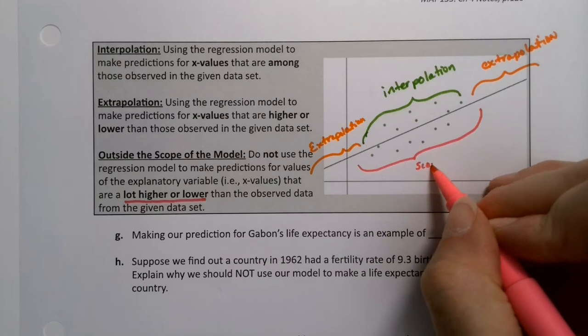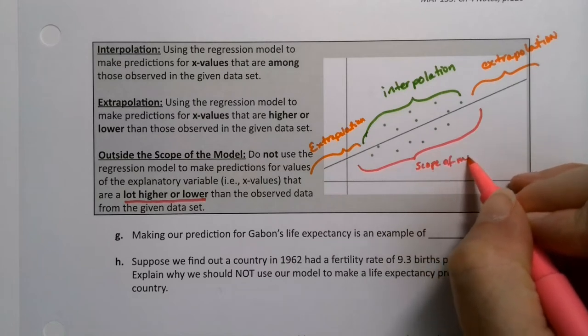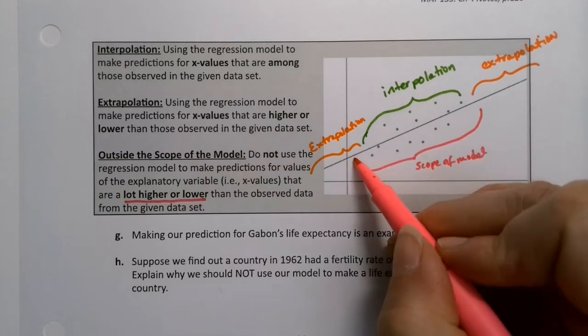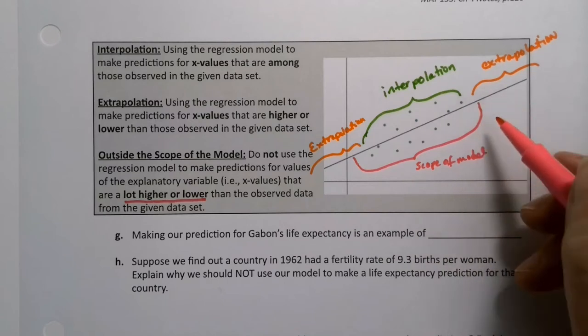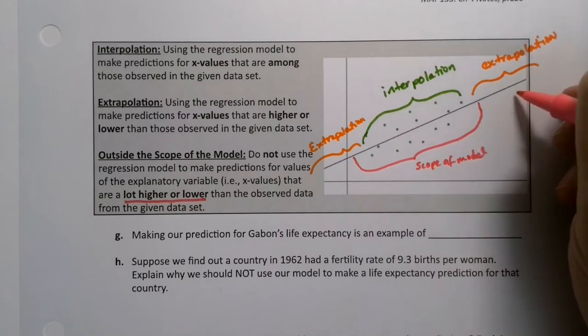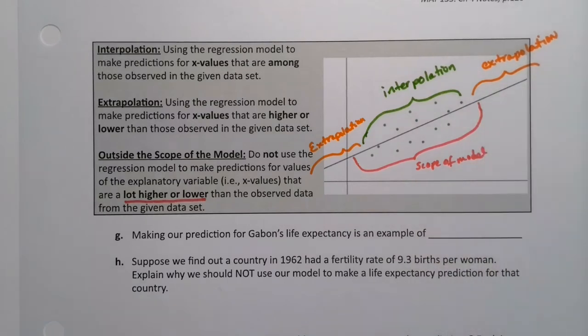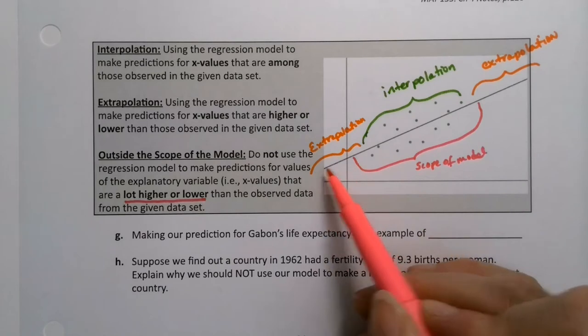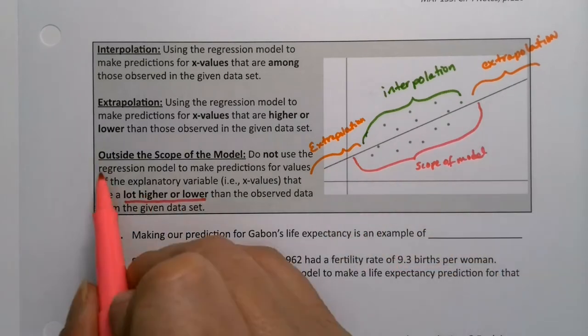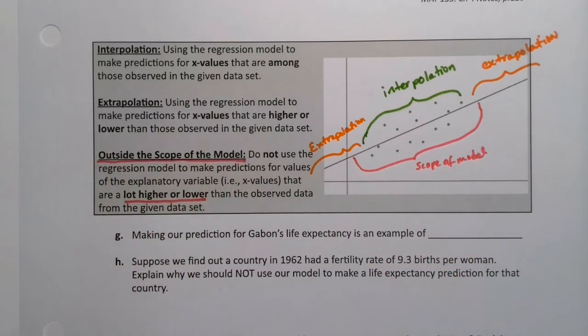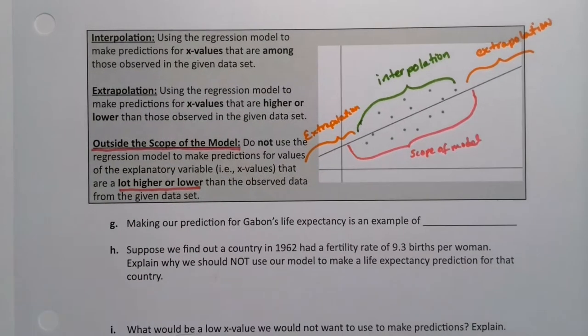This would be the scope of the model. You can go a little bit before and a little bit after, and you're probably okay. But past that is outside the scope of the model. So if you're over here or over here, you're outside of that scope. You don't want to use the model to make predictions that are too far away from your actual known data points.